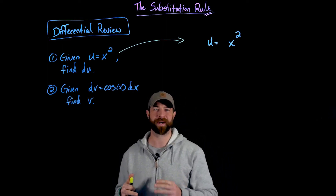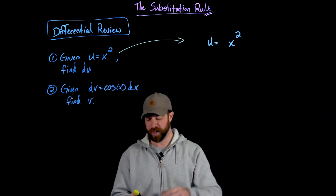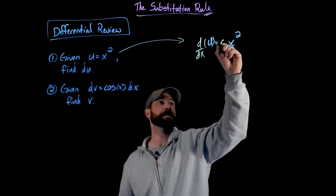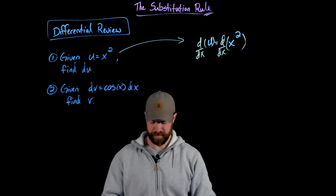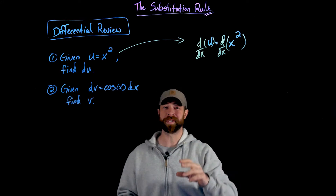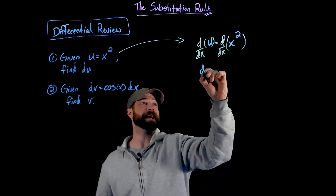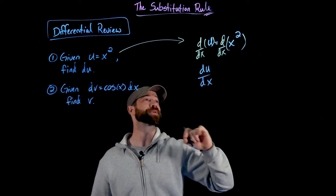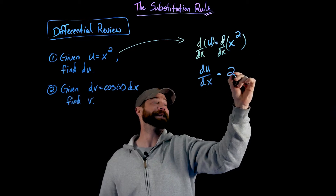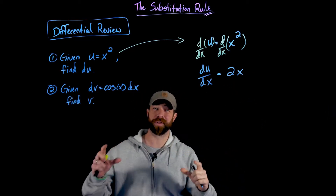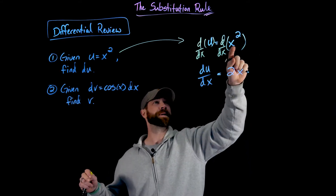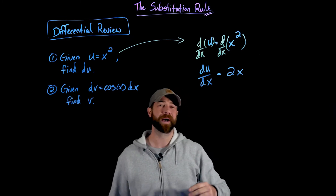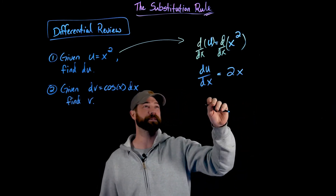In this first case, if I have u equals x squared, I'm asked to find du. What I would do is apply the derivative with respect to x of both sides of this equation. The derivative of u with respect to x is simply du/dx — that's the definition. On the other side, since I'm differentiating x squared with respect to x, I get 2x. There's no chain rule factor because I'm differentiating with respect to this variable directly.